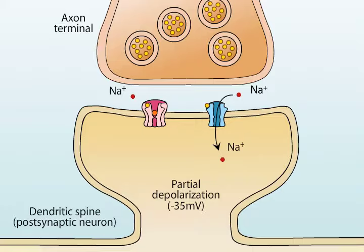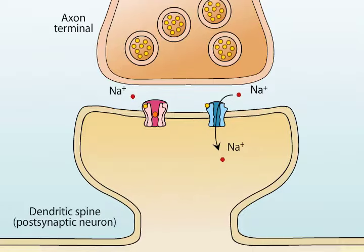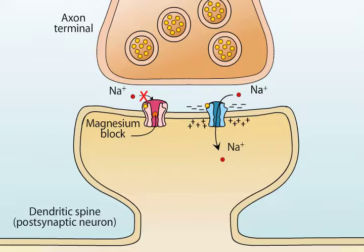When glutamate binds to the NMDA receptor at slightly depolarized or resting membrane voltages, very few ions flow through the channel. This low conductance occurs because the pore of the channel is blocked by magnesium ions, which prevents other ions from passing freely through the channel. Under such conditions, the EPSP will be mediated entirely by the AMPA receptors.